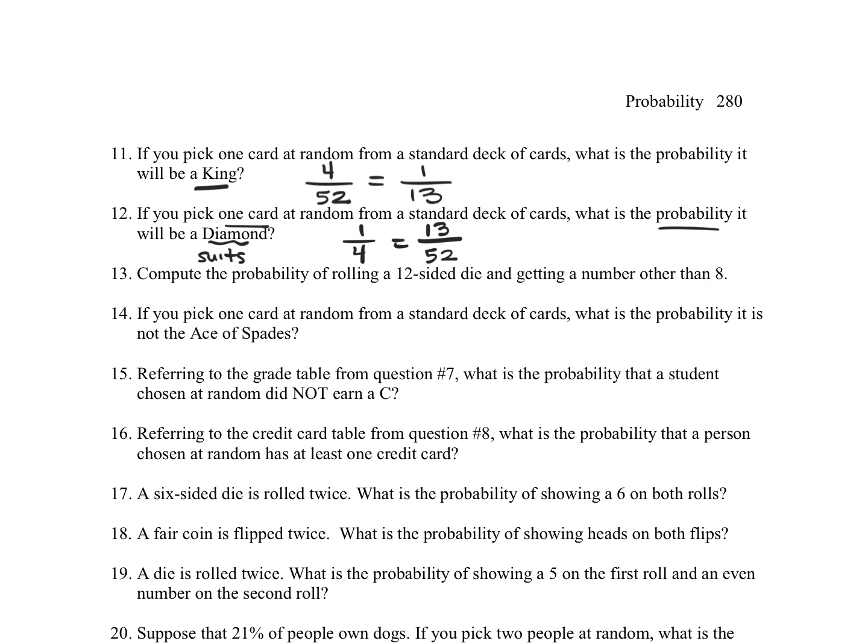For number 13, compute the probability of rolling a 12-sided die and getting a number other than 8. So the probability of getting an 8 is 1 out of 12. So you could sit and list all the different numbers, but what we could also do is by the complement, because it wants everything but that 8. So we'll do 1 minus that 1/12, which is another way. We could just say that's going to be 11/12.